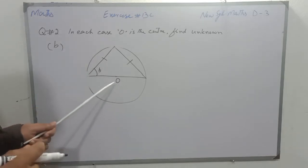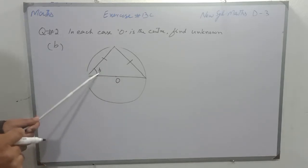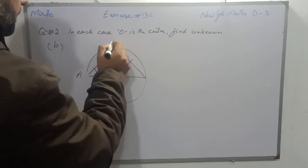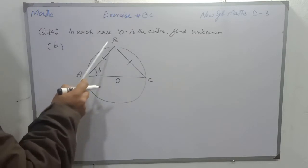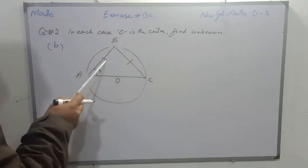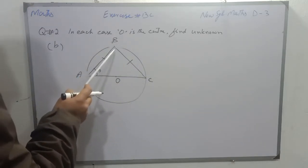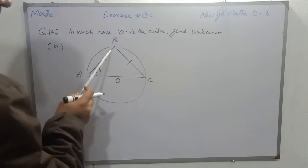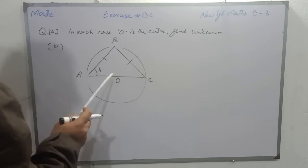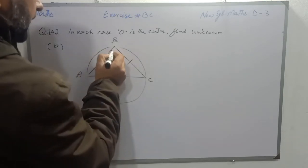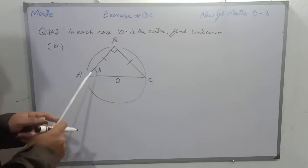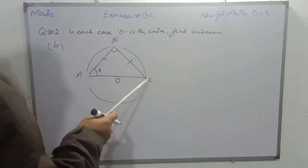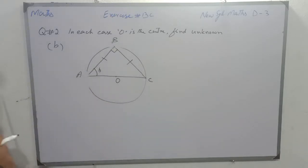Students, in part B there is a circle with center O and we have to find angle B. First I will name the points as A, B, and C. In the given, AB and BC are congruent. Angle B is a right angle because it is on the semicircle — it is half of the supplementary angle of 180 degrees. Triangle ABC is an isosceles triangle because BC and BA are congruent.